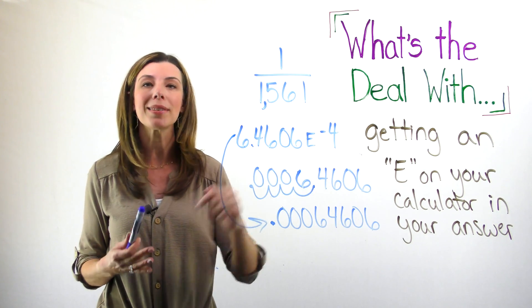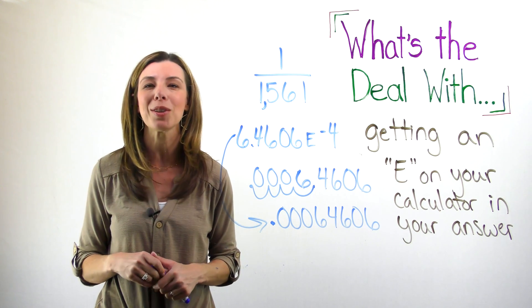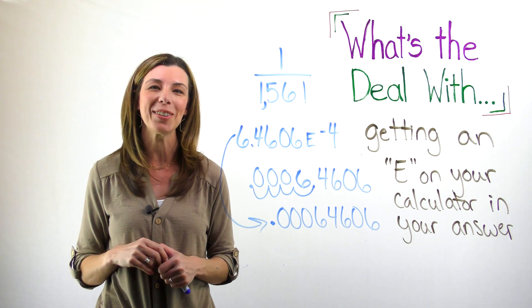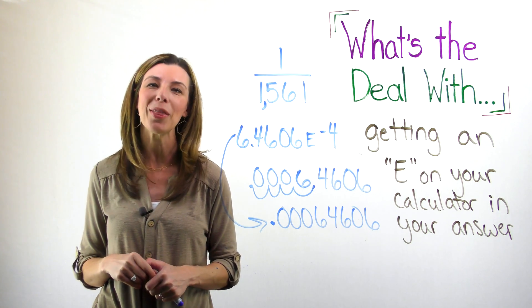Again, it could also be positive. That would mean that it's being multiplied times a larger number, which would mean the decimal would be moving to the right. I hope you now understand what's the deal with the E on your calculator and know how to interpret those answers.